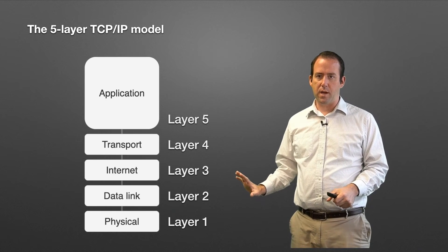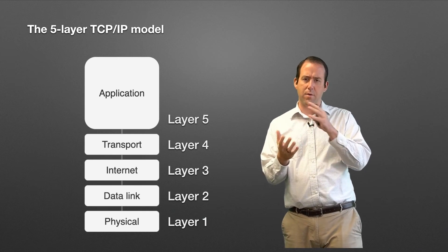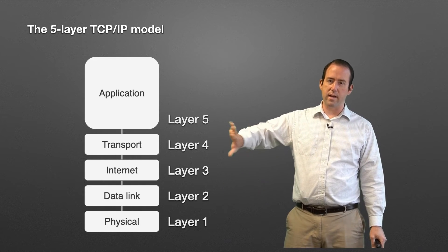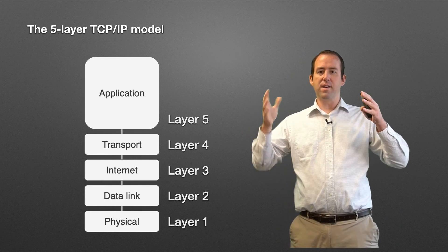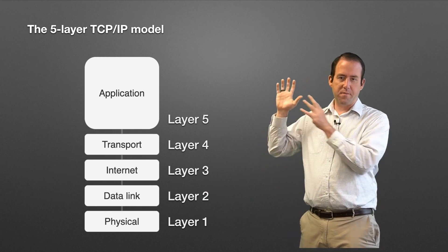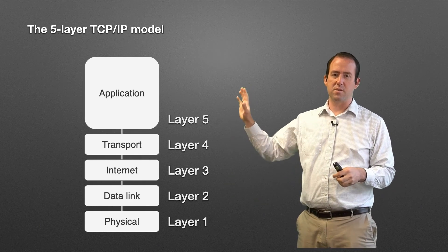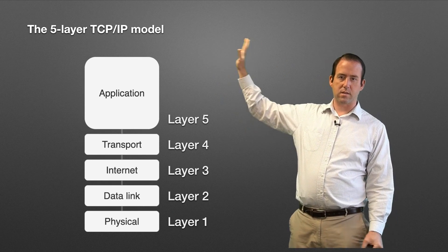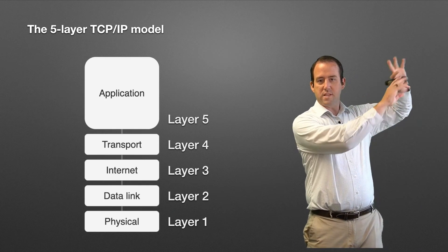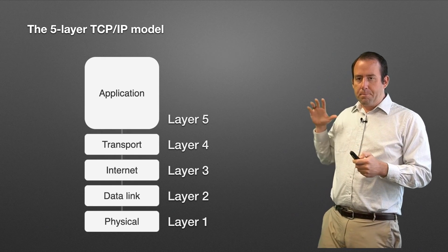This is the five-layer TCP/IP model. There's also a four-layer model where the data link and physical layers are combined into one, called the network access layer or data access layer. But in the five-layer version, at the bottom we have the physical layer, then data link, internet, transport, and the application layer. As data is sent across the network, it starts at the application layer and moves down through each layer to the physical layer, where it becomes bits and bytes moving to the next hop along the path.